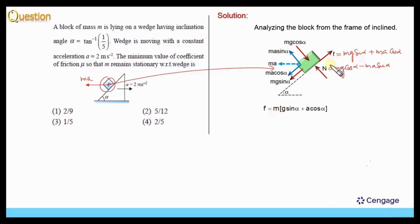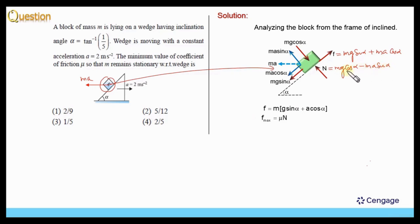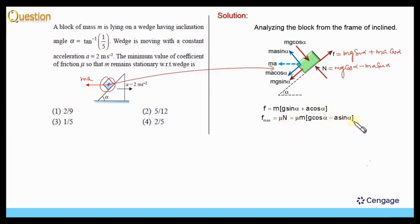Now let us calculate the limiting friction force, that is, the maximum possible value of the friction force. This value is equal to mu multiplied by N. N is equal to mg cos alpha minus ma sin alpha. Taking m as common, this value is mu multiplied by m times (g cos alpha minus a sin alpha).